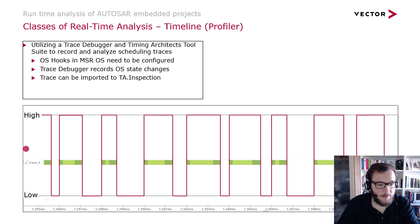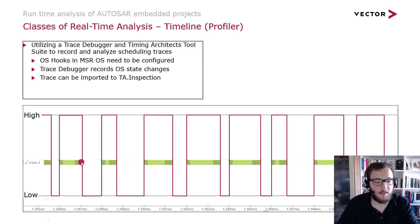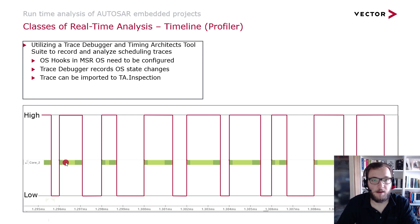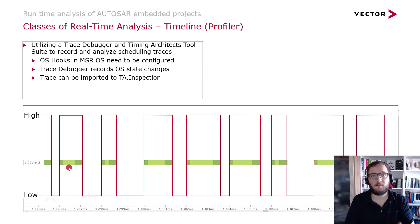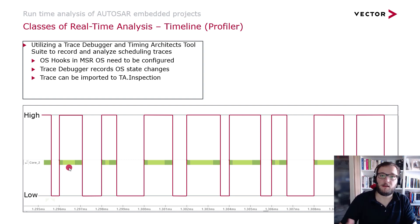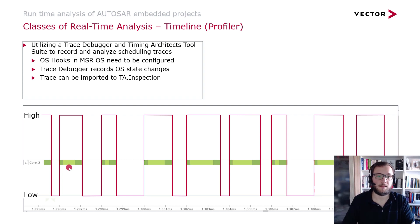What you can see is that you get way more details compared to just pin toggling. Of course you also know when the task was activated and when it's terminated. But additionally you get information like preemptions, which you can see here in the light green color. This kind of analysis provides a way deeper insight into the behavior of your system — you can see how often the task was preempted and how often other tasks interfered with the task you are looking at. This allows you to make further steps to optimize the system.